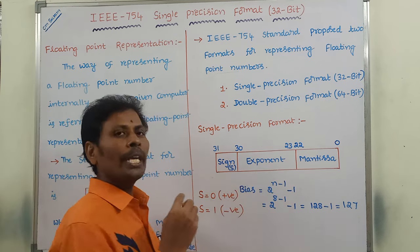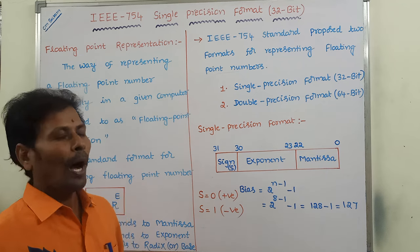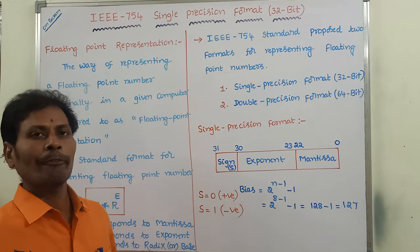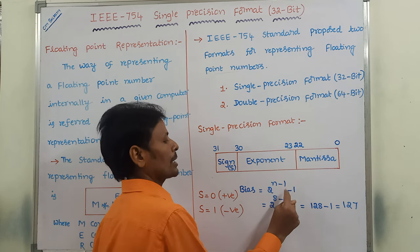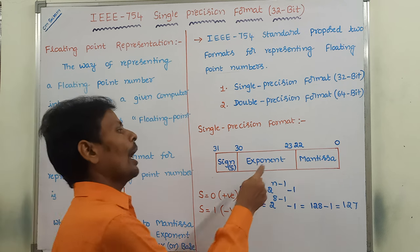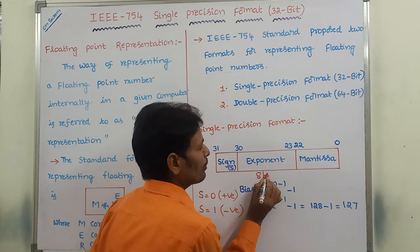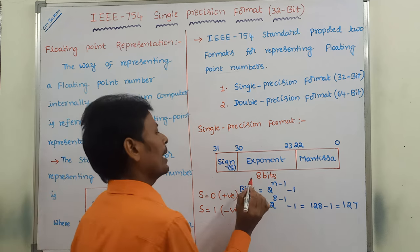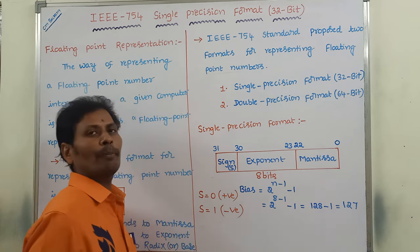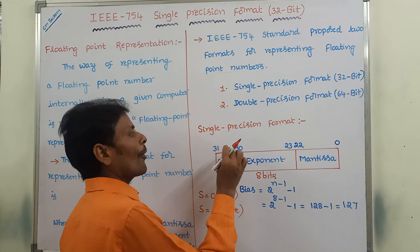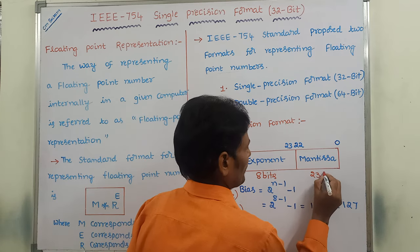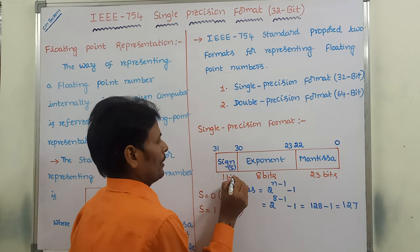For the exponent, we must add a bias value. To find the bias value in single precision format, the formula is 2 power (n minus 1) minus 1, where n is the number of bits allocated for the exponent. Here, 8 bits are allocated for the exponent, so substituting n equals 8: 2 power 7 minus 1 equals 128 minus 1 equals 127. Therefore, in the case of single precision format, the bias value is 127.